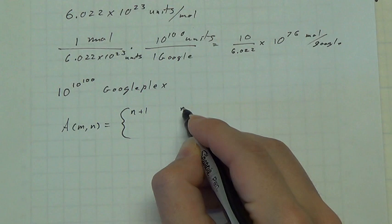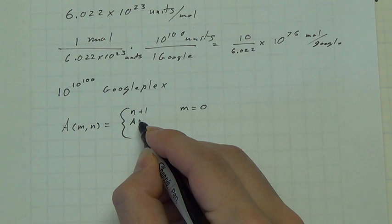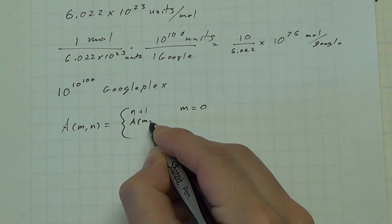And this is n plus 1 if m is equal to 0. It is the Ackermann function m minus 1, 1 if m is greater than 0 but n is equal to 0.